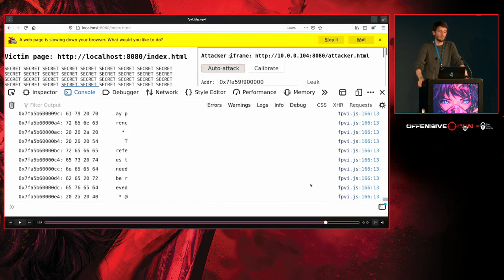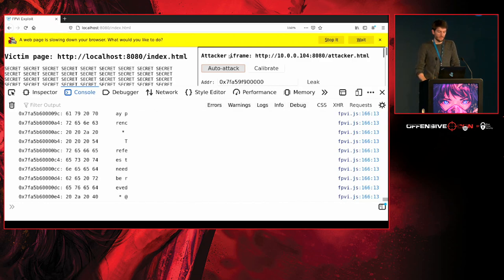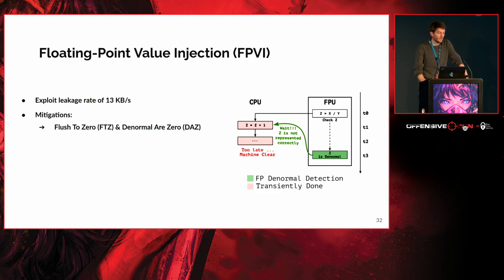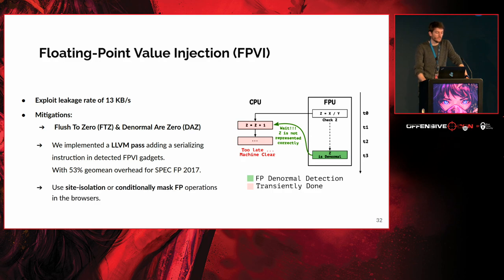We have fully compromised the process. From a floating point division to reading arbitrary memory, all within a JIT engine using speculative attacks — pretty powerful. The leakage rate was about 13 kilobytes per second. Regarding mitigations: you can disable subnormal representation in the floating point unit; we also implemented a compiler pass to serialize possible FPVI gadgets with 53% overhead. As Firefox did, after every floating point operation they conditionally check the floating point result is not of NaN-box type, preventing type confusion of the JavaScript engine. Chrome was safe by default because it was already using site isolation.